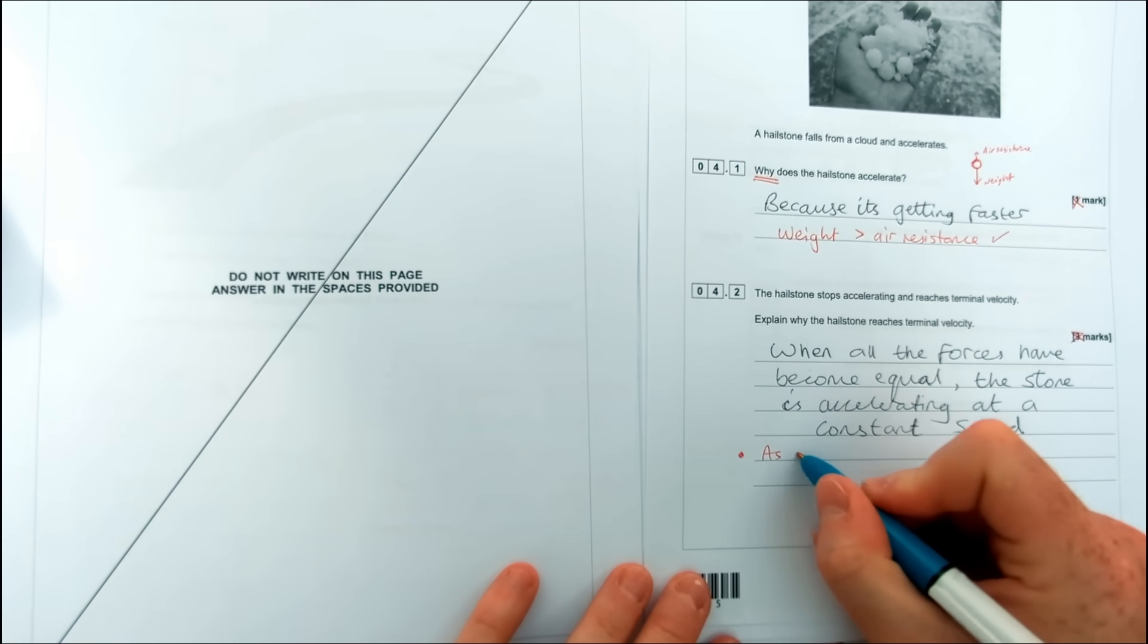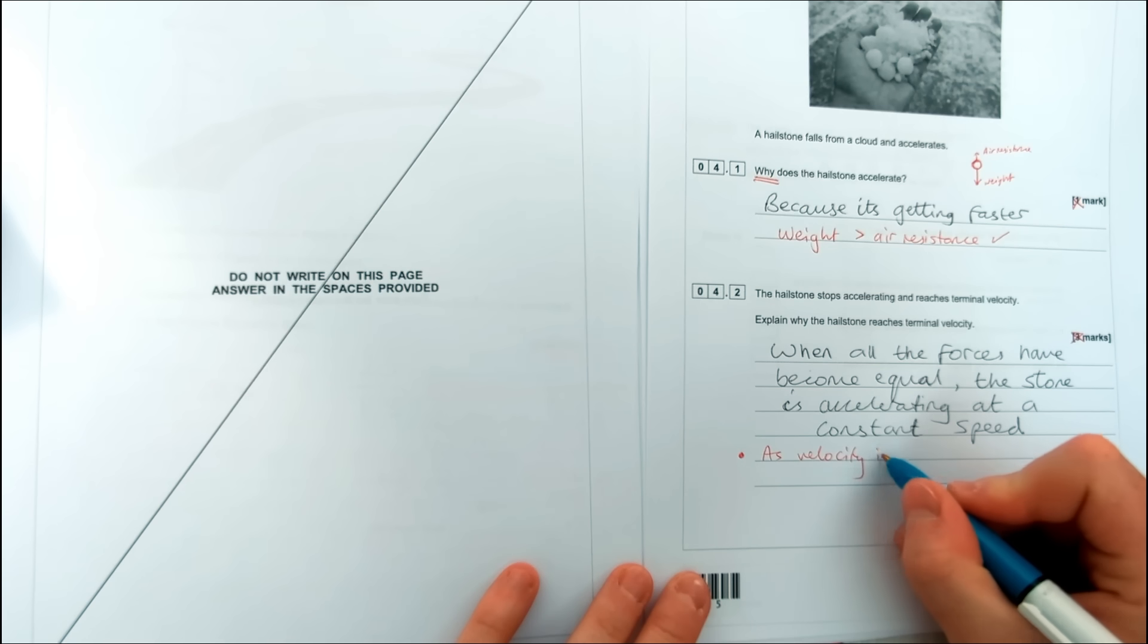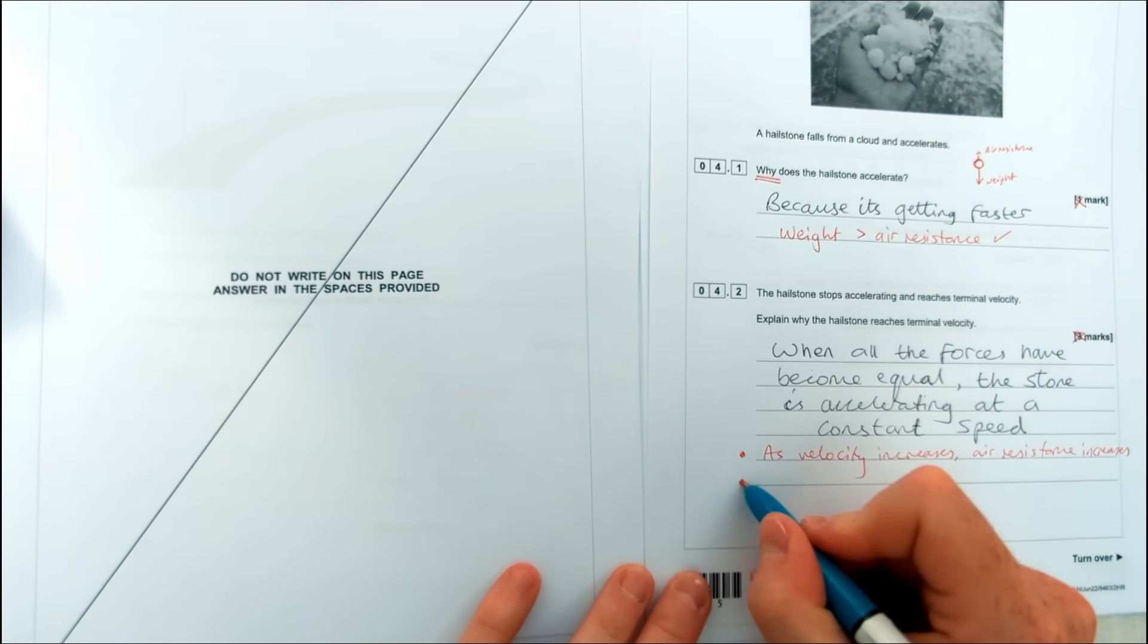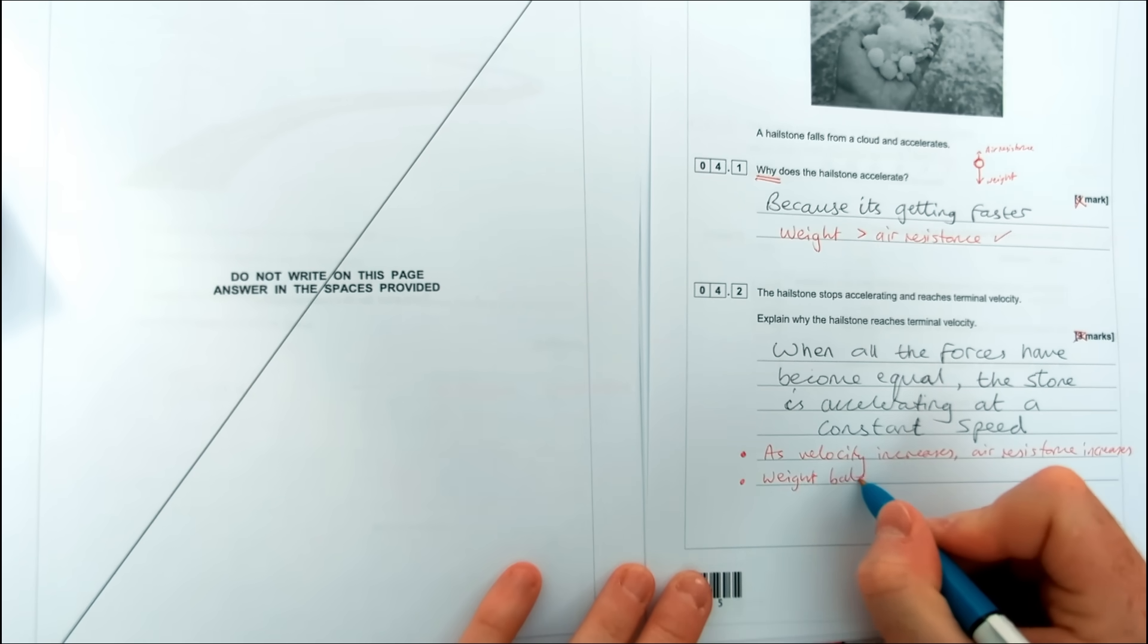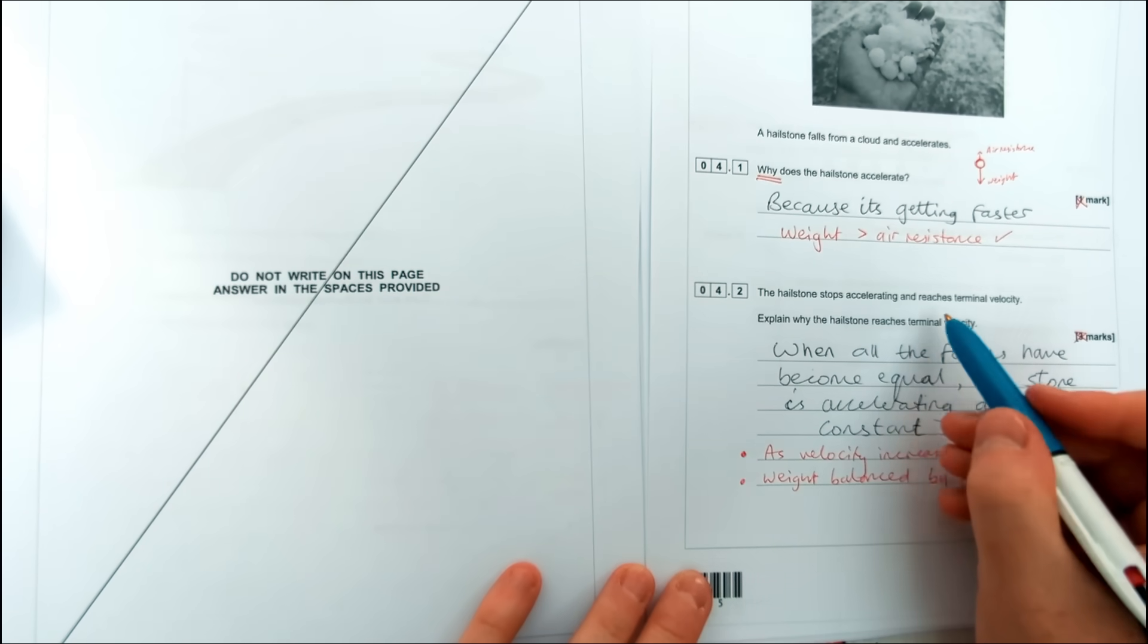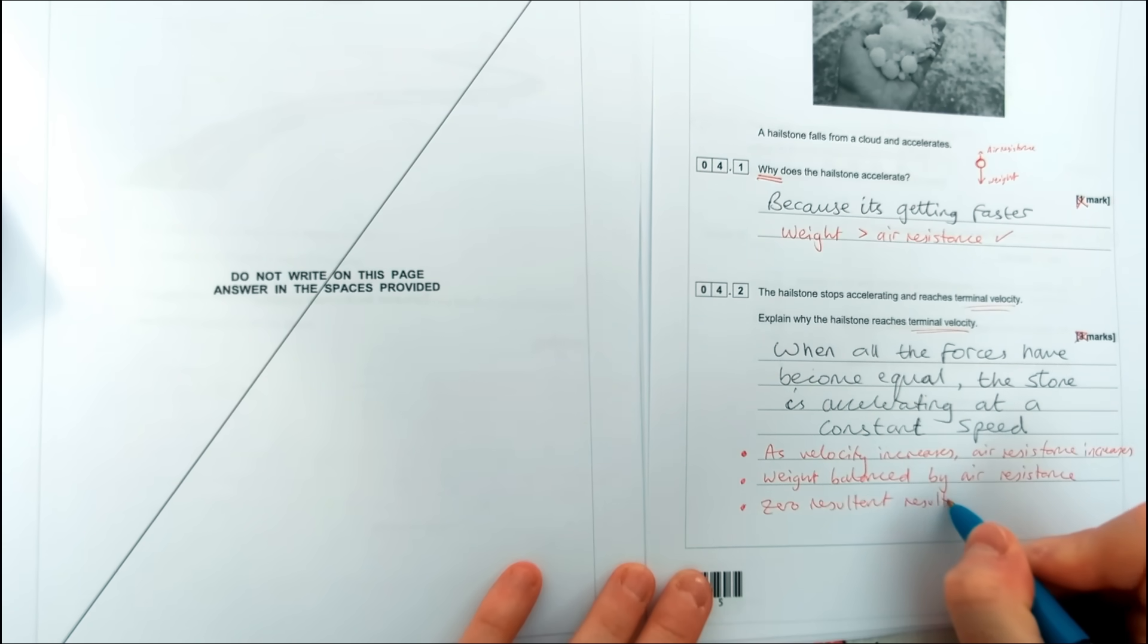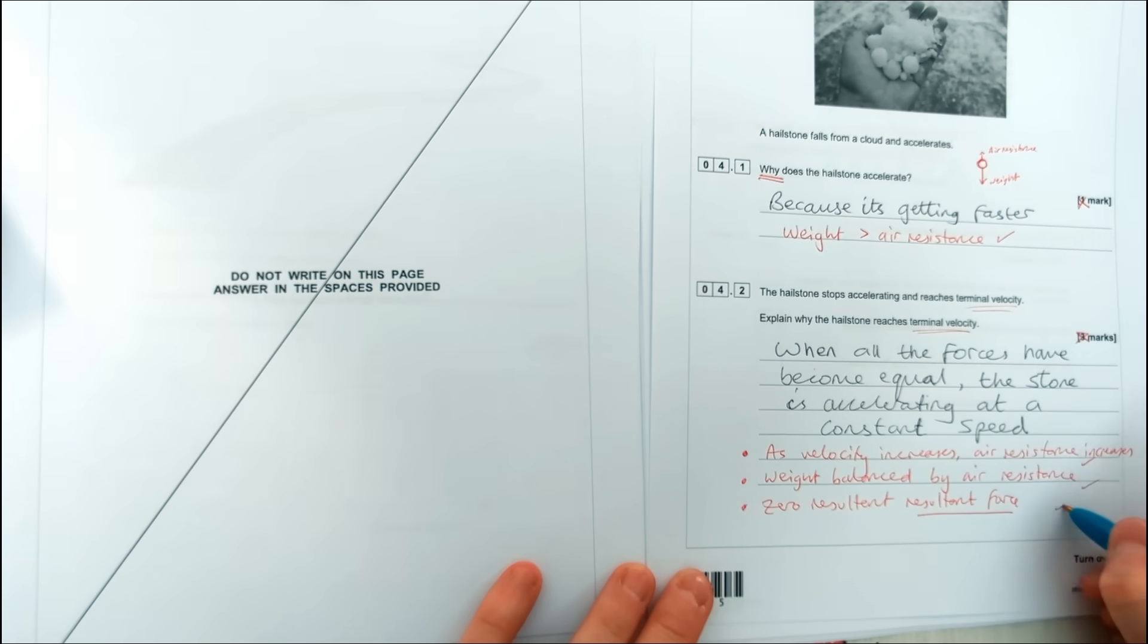Let's do the first mark in this question. First it says that as the velocity increases, so as it gets faster, you've got to talk about what happens to the air resistance. So as velocity increases, that's when the air resistance also increases. So as it travels faster you're going to get a greater air resistance acting on it because it's colliding with more air particles per second. Then we say when the weight is balanced by the air resistance, then we say instead of constant speed, which is absolutely correct, we'd say there's no resultant force or zero resultant force acts overall. Don't forget resultant force just means the difference between these two forces. So if they're equal you subtract them, it's going to be zero.